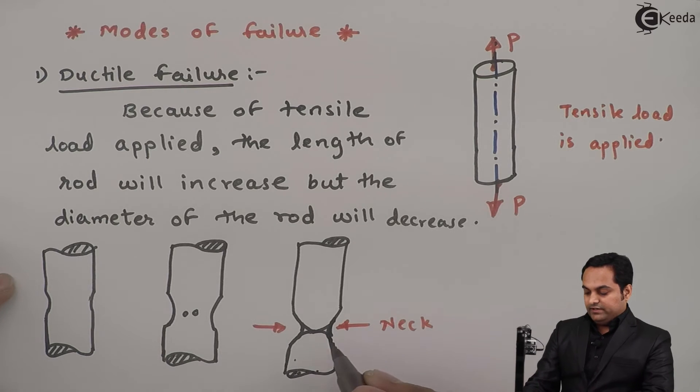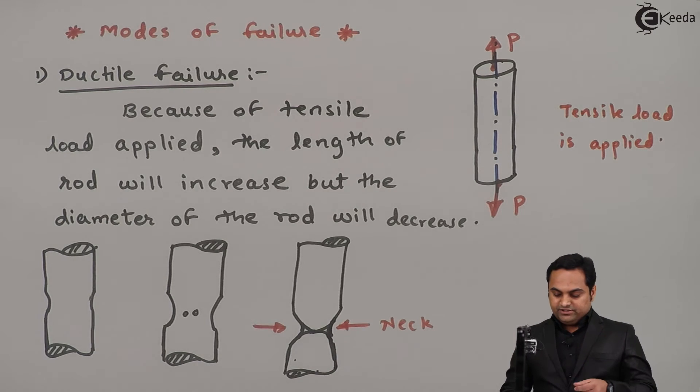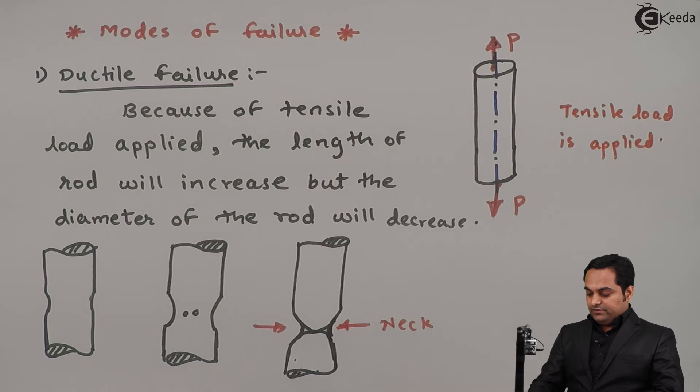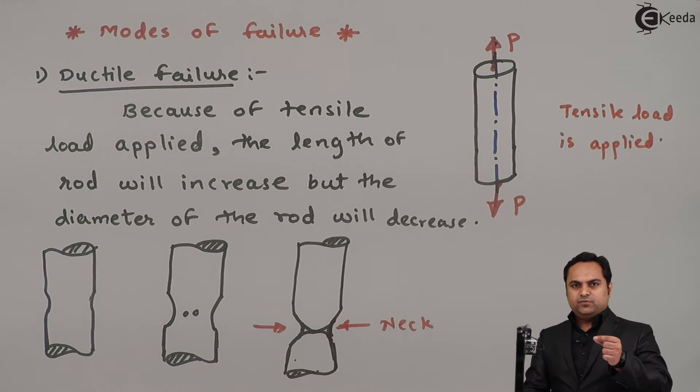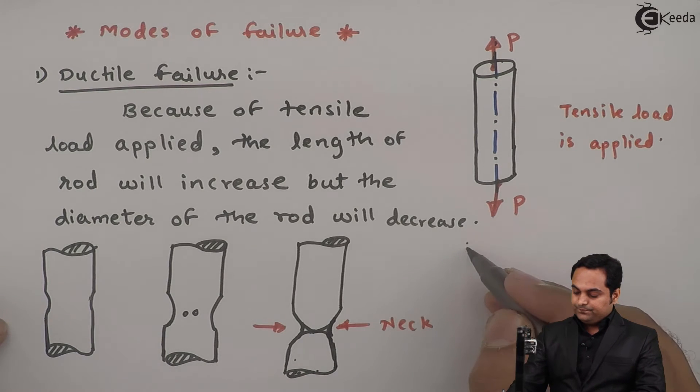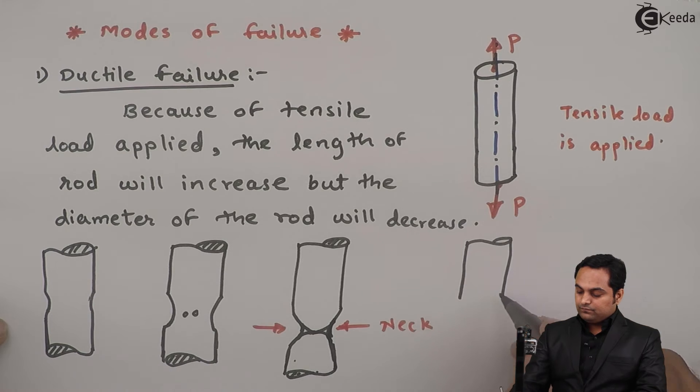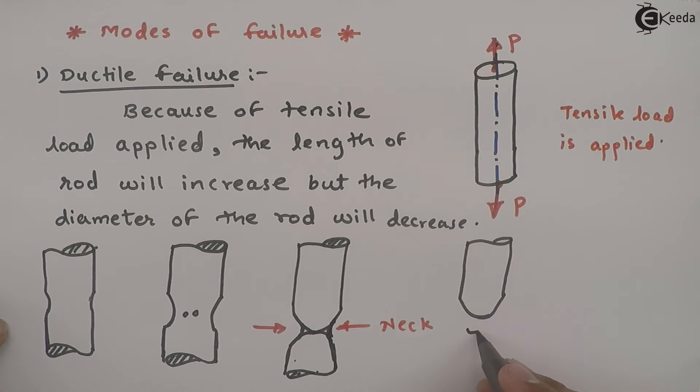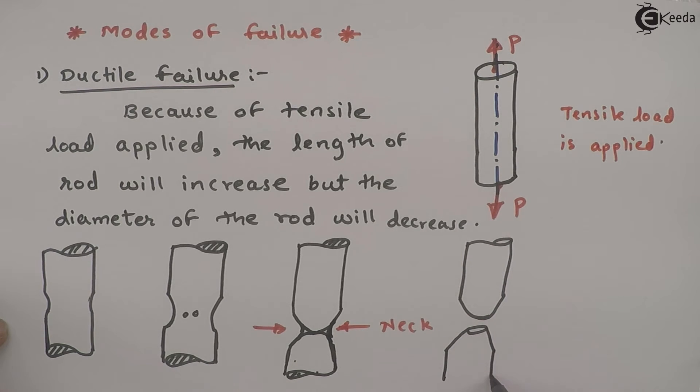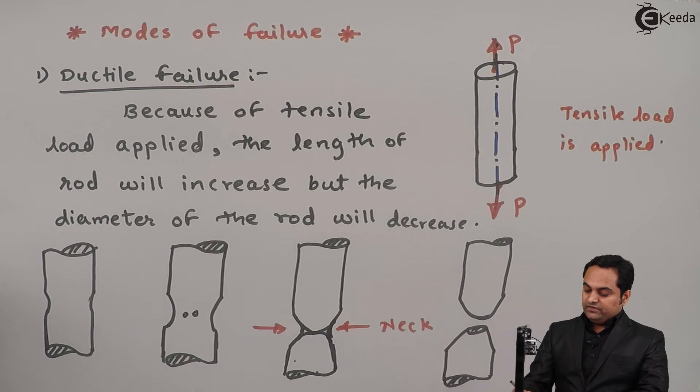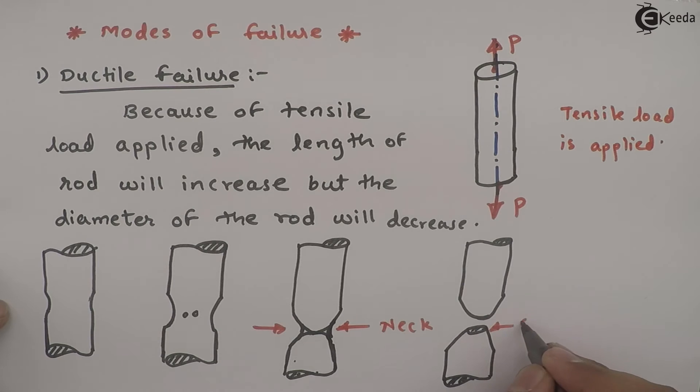Neck has been formed - the diameter is reduced to such a value that there is a very small diameter left. Further, if we are applying the load, that will result in a cup and cone arrangement.